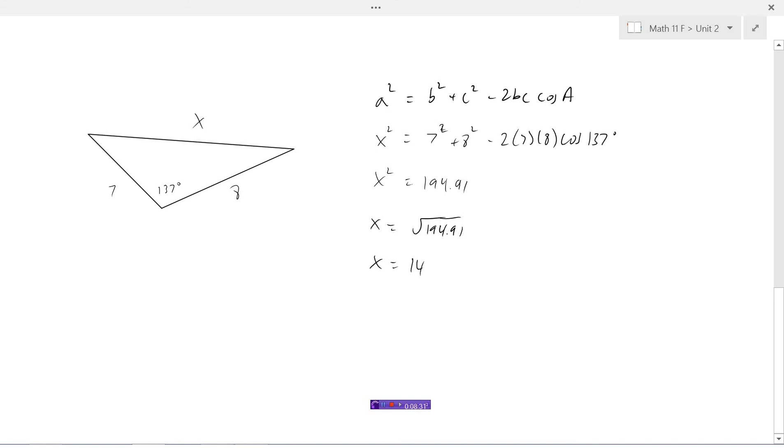So no difference. If you're using the cosine law in any triangle, whether it's obtuse or whether it's acute, it'll always work, no problems.